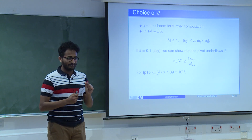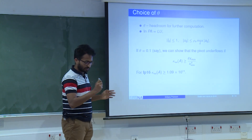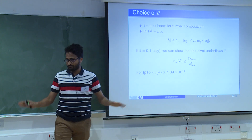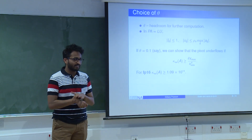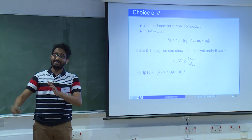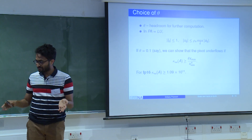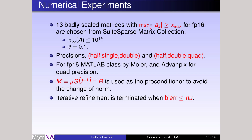There is one subtle point: underflow of pivots when doing LU factorization in half precision. We can show that if the condition number of the matrix is less than a particular threshold — which for half precision is of the order 10¹¹ — there is no problem with pivot underflow. Because diagonal scaling typically reduces the condition number, in all our numerical experiments the condition number was far below that threshold, so underflow of pivots was never a problem. For the experiments, we considered 31 matrices from the SuiteSparse matrix collection with entries exceeding the half-precision maximum and size less than 300, from which we chose 13 representative matrices.